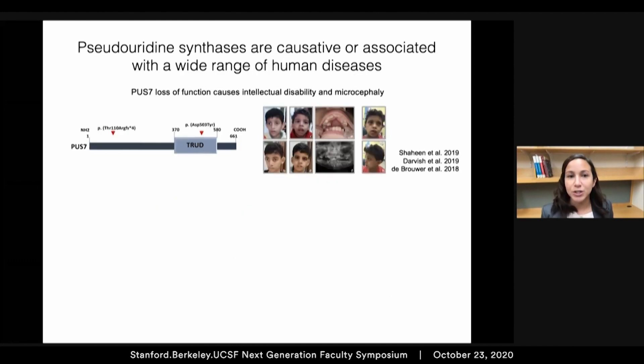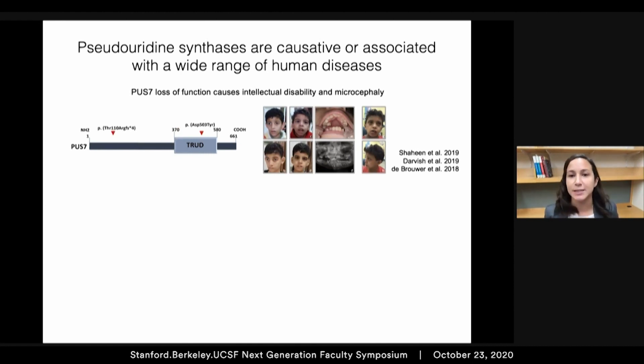There are 13 of these enzymes in human cells, and the vast majority of these have been shown to be causative or associated with a wide range of human diseases.